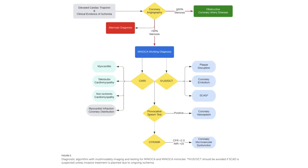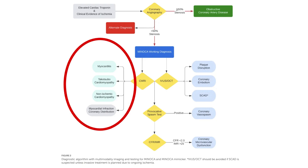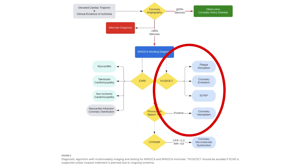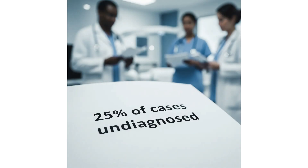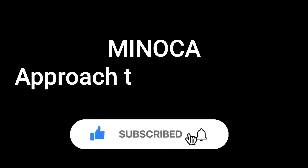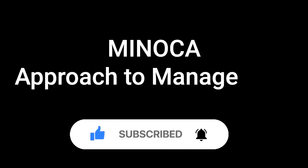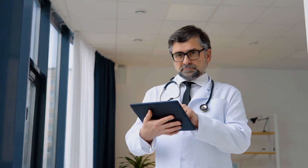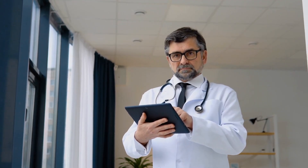Therefore, the clinical workup of MINOCA should follow two key directions: number one, exclude the MINOCA mimikers; number two, examine the coronaries for plaque-related pathologies. It's crucial to note that even after comprehensive diagnostic evaluation with coronary imaging, cardiac MRI, and other investigations, the underlying cause of MINOCA can remain unidentified in up to one quarter of cases. So how should we approach a full-blown MI with no significant coronary blocks?